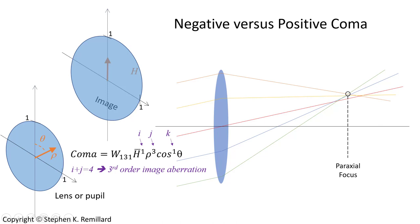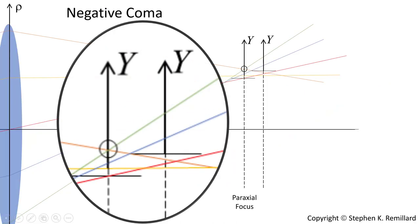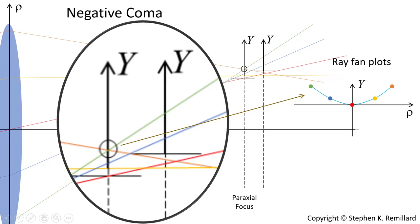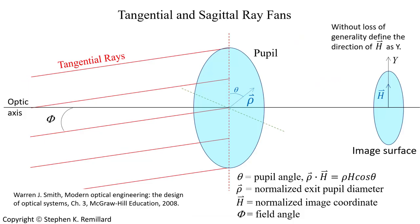Besides being positive, coma can also be negative — in that case marginal rays focus above the optic axis relative to more central rays. The image plane showing paraxial focus has the marginal ray focus higher than the other rays, and shifting out from paraxial focus they pierce at even higher points. A ray fan plot of these rays is concave up. Shifting along the optic axis, there will always be rays lower than where the chief ray pierces, so the minimum of the upward concave curve shifts as well.